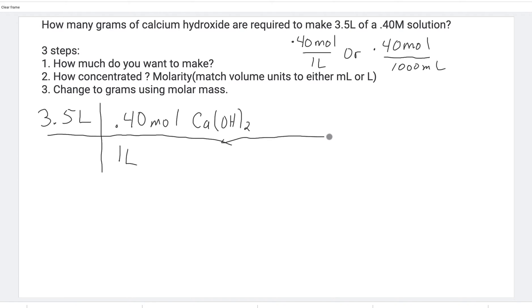Now we want to change to grams: one mole calcium hydroxide. We've got to figure out the molar mass. One calcium, that's times 40 grams, equals 40. Two oxygens times 16 grams equals 32. Two hydrogens times one gram equals 2. We add all that up: that's 74 grams. So the molar mass is 74 grams calcium hydroxide.